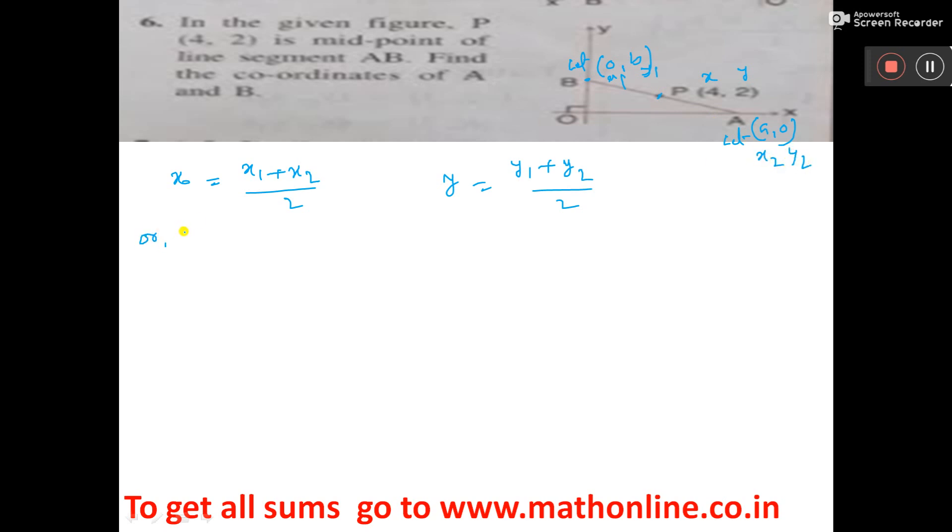Now you put the value here. x means 4 and y means 2. See here xy, y means 2. Now what is the value of x1? Here 0. And what is the value of x2? That is A. And here, what is the value of y1? That is B. What is the value of y2? It is here 0, y2.